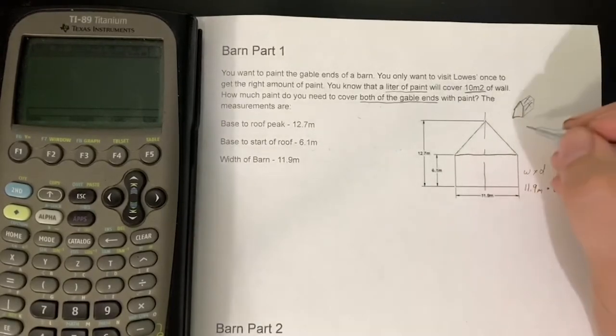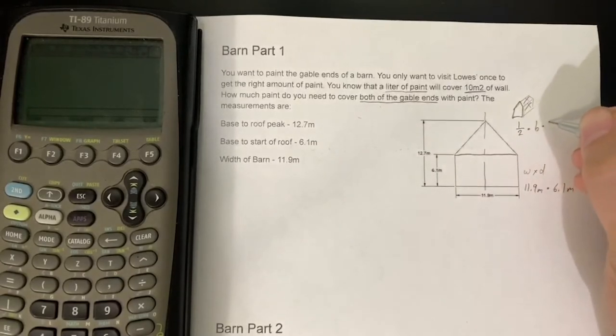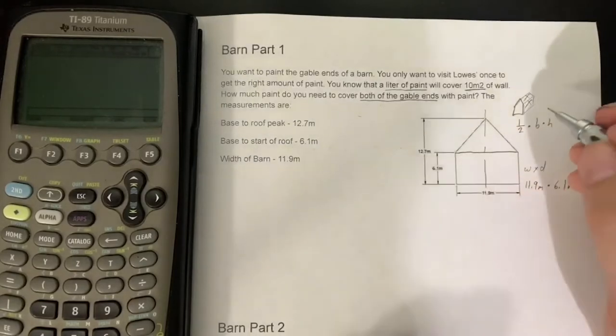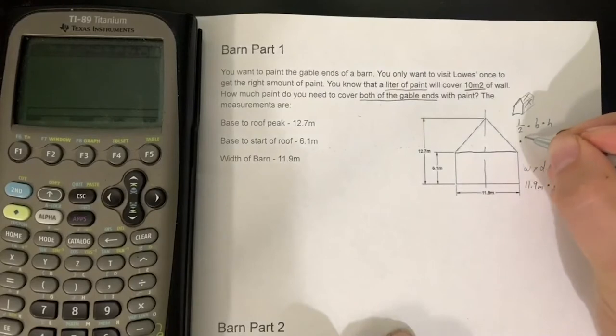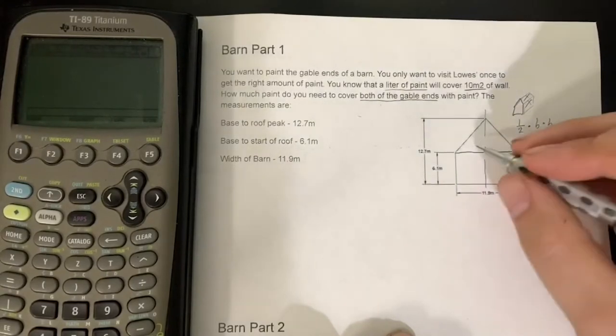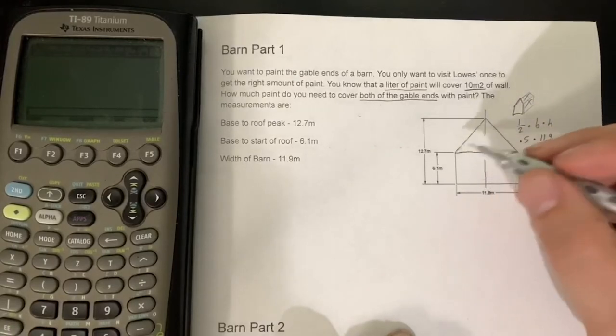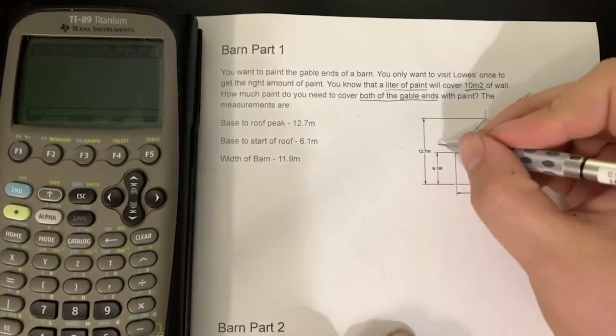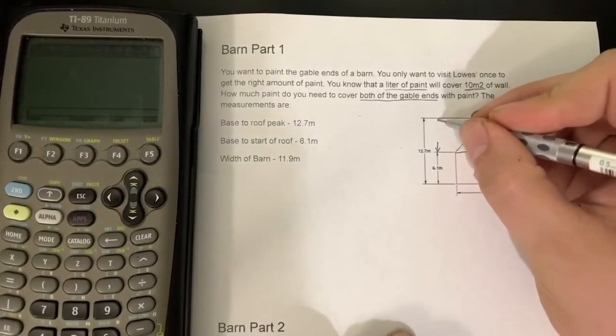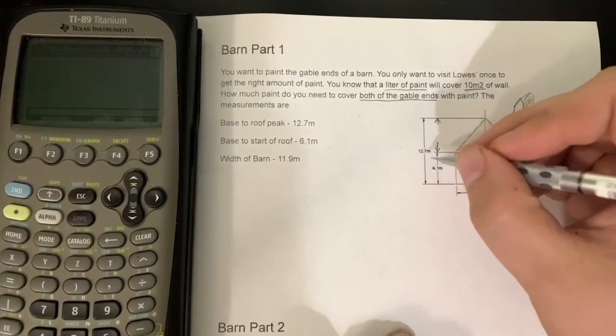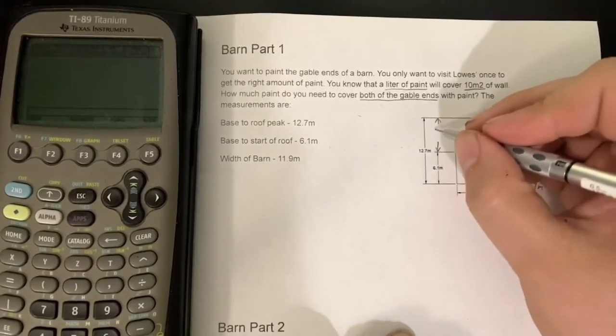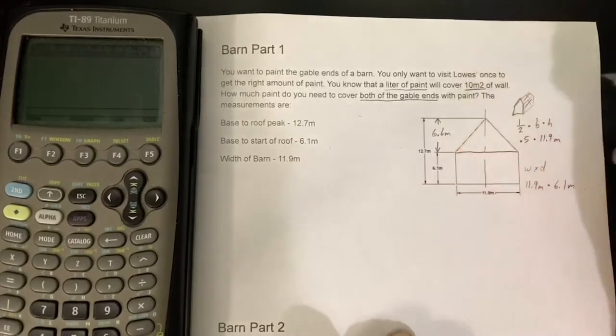We also know that for the triangle part of it, it's 0.5 times base times height. So in this case, triangle: 0.5 times base is going to be the same as the rectangle, so 11.9 meters. And we know that, well, we don't see the height, we can calculate it. So if we calculate it, we're basically saying this 12.7 minus 6.1, and quick math is saying that is 6.6 meters. So we'll multiply it by 6.6 meters.